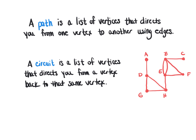Whenever you have a path, it is simply a list of vertices that directs you from one vertex to another using edges. For example, I can create a path from vertex A to vertex F by going from A to D to H to E to F. That, however, is not a unique path.